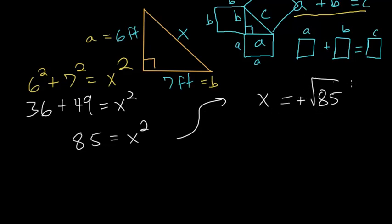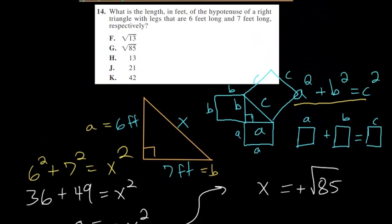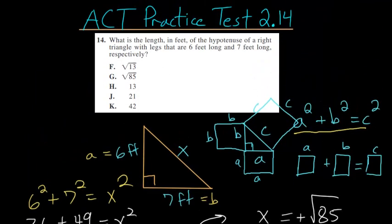So x is the square root of 85. And if we go back up to our answer choices, you can see that choice letter G is the correct answer.